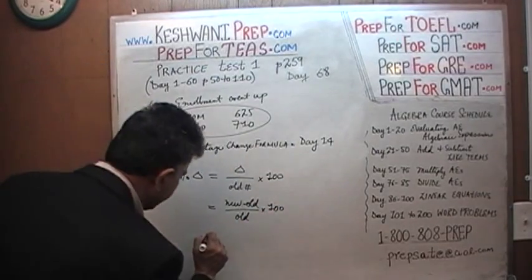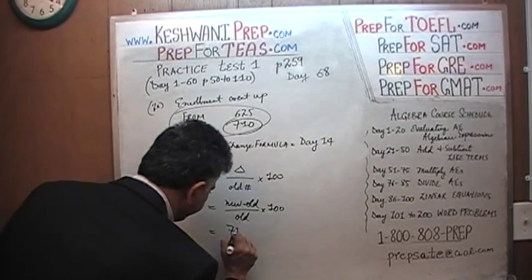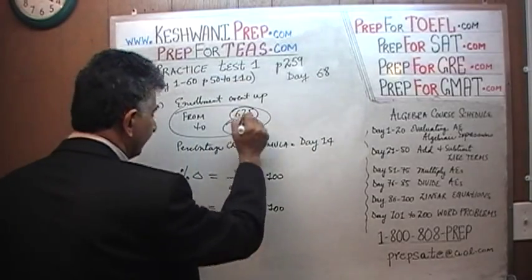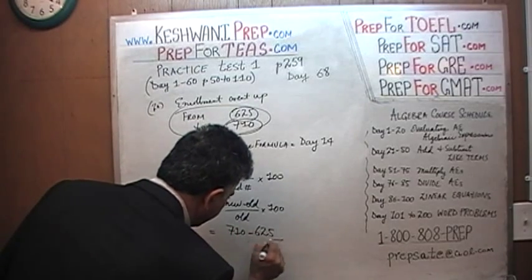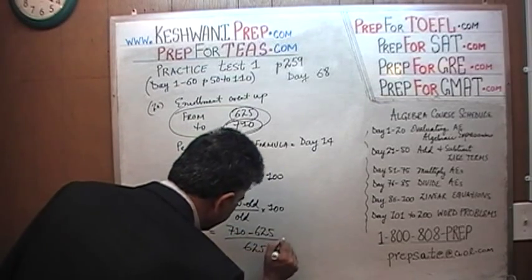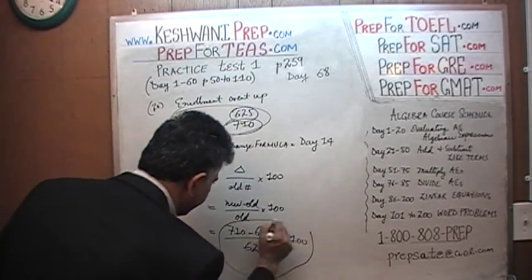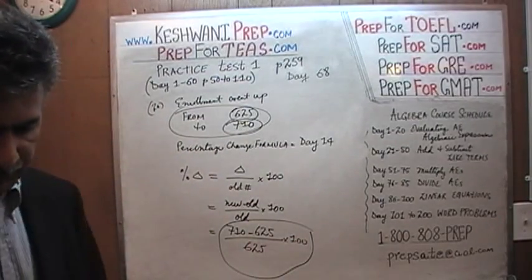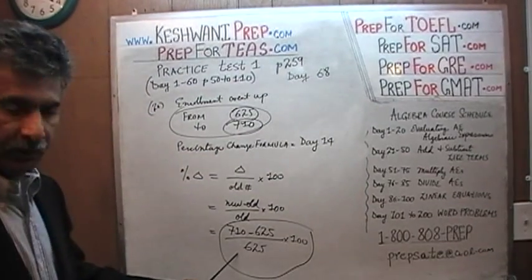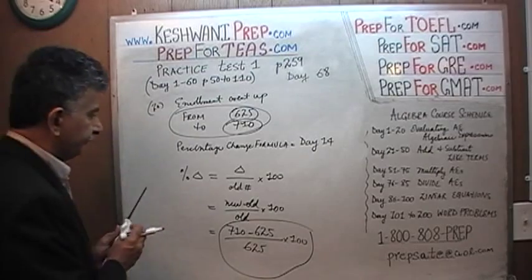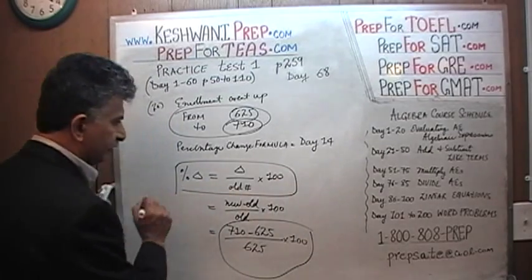So: new minus old, divided by old, times 100. The new number here is 710, minus the old number which is 625, divided by the old number 625, times 100. This is what we have to work with. We are going to simplify this. One more time — the formula for percentage change is this one, and it was covered on day number 14.